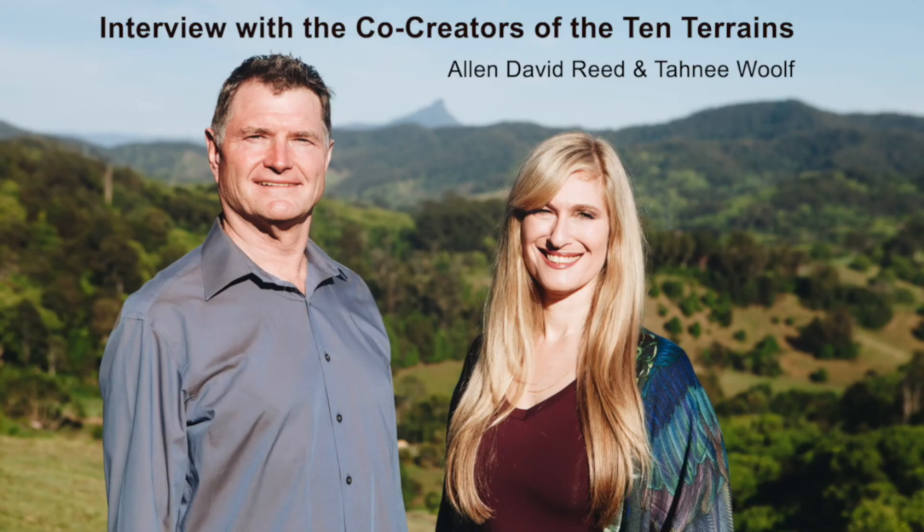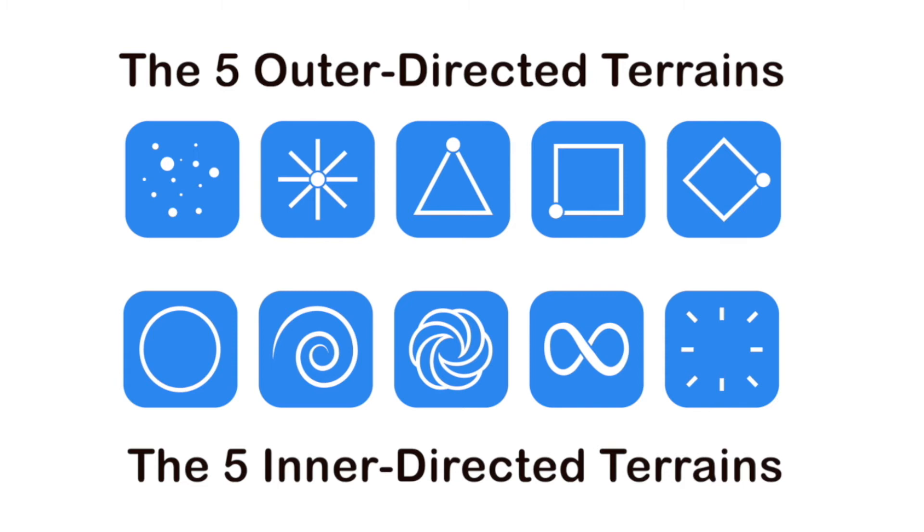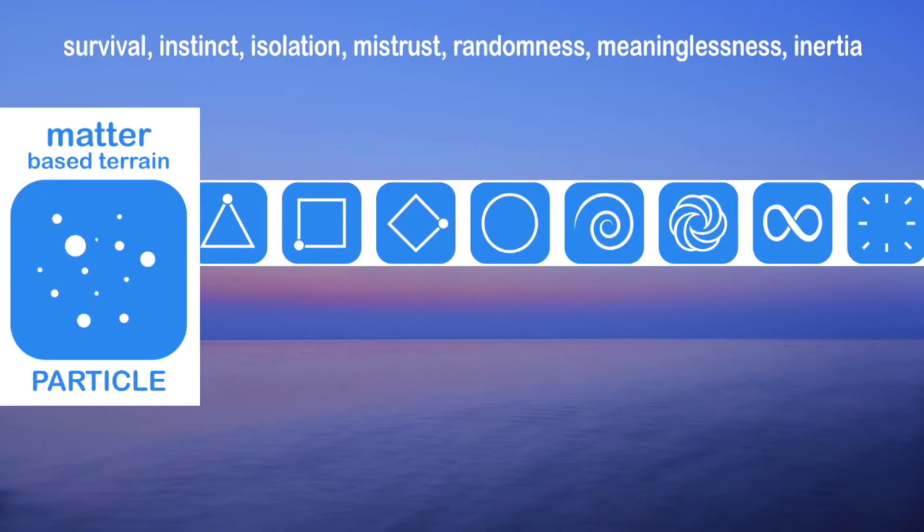Give us a nutshell. I mean, we're down in just a couple minutes. So tell us, in a nutshell, five outer-directed terrains and the five inner-directed terrains.